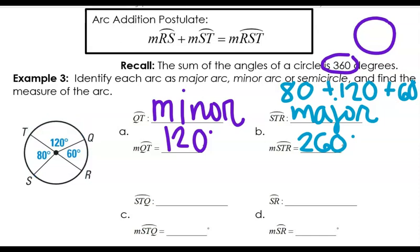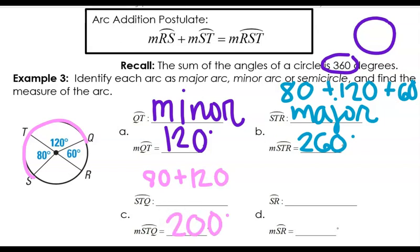Now let's look at arc S-T-Q. All I have to do for this one is add up the 80 and the 120. So that is 200 degrees. Now that's more than 180. Plus, if this was a diameter, the semicircle would be 180 degrees because that's half of 360. Since this is going further around more than that, I know this is going to be a major arc. Plus, three letters — I know for sure that's going to be a major arc again.